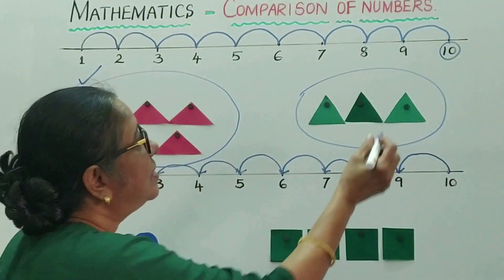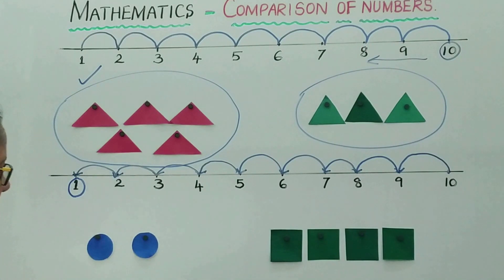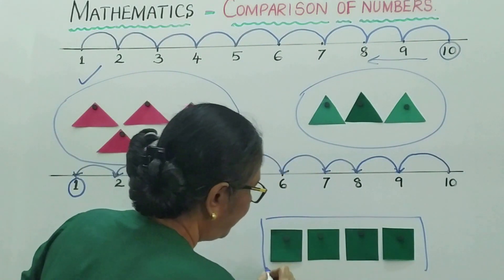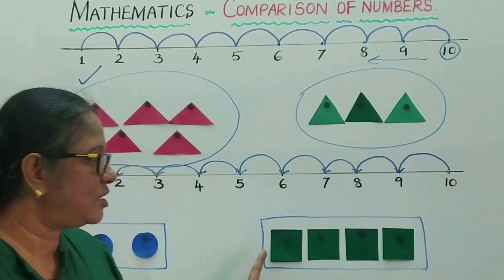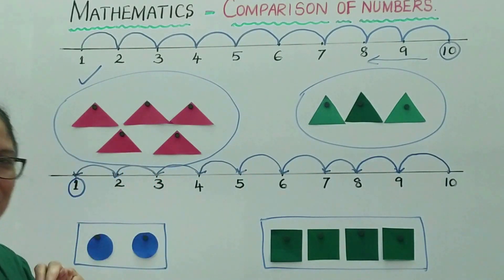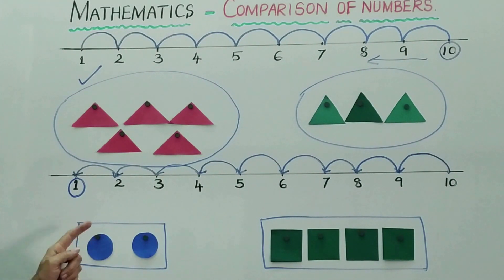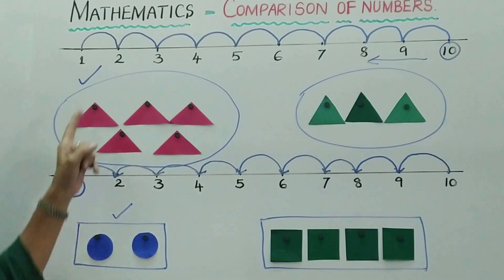Now I'll show you some objects. I have circles in this box and squares in this box. How many circles? 1, 2 — two blue circles. How many green squares? 1, 2, 3, 4 — that's 4. So which is greater — 4 or 2? 4 is greater and 2 is less, so 2 is least.